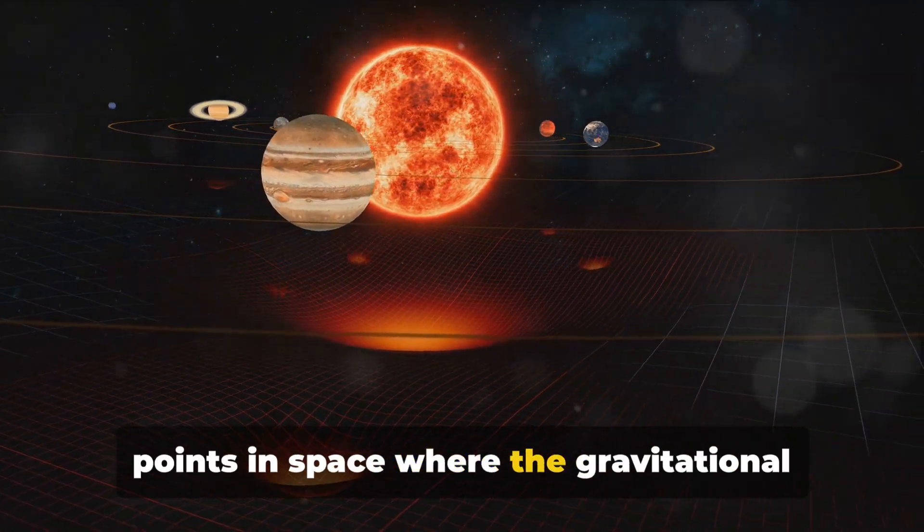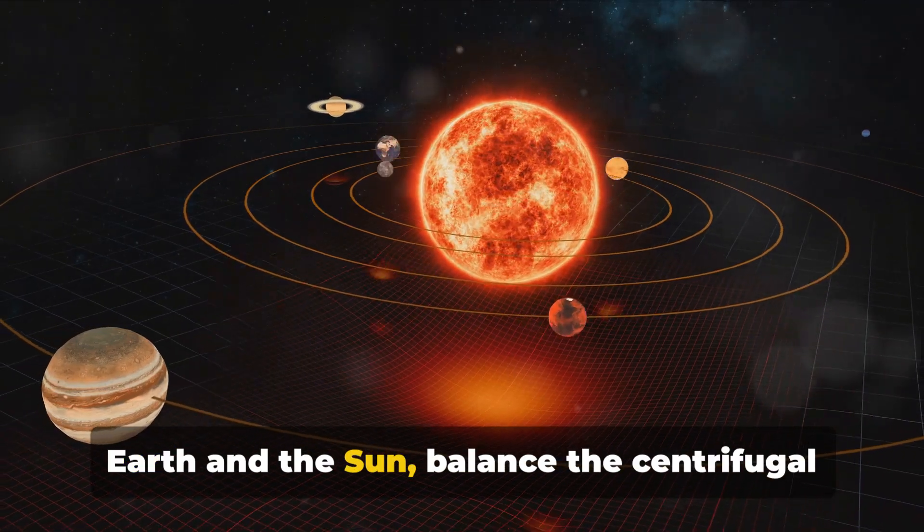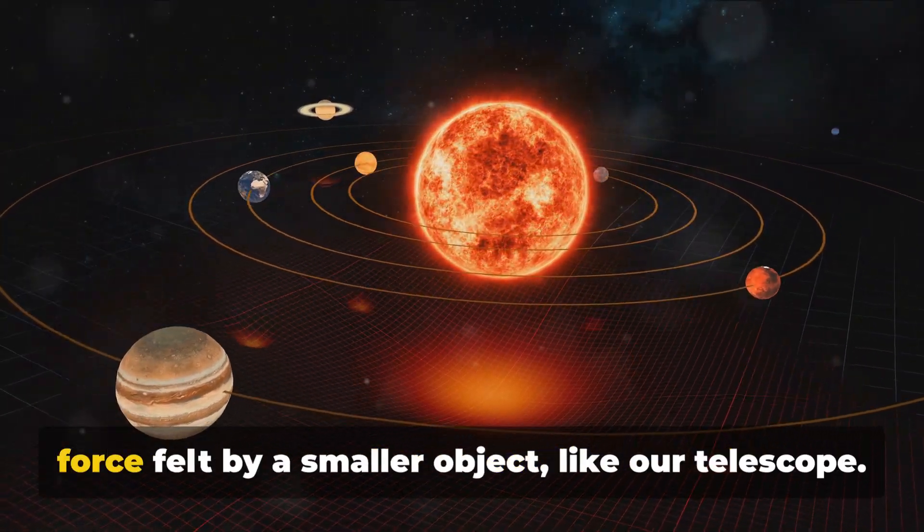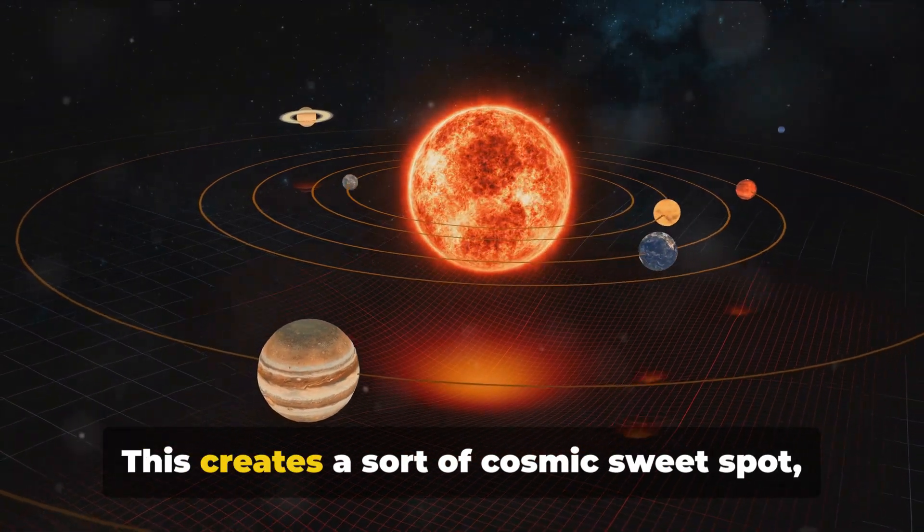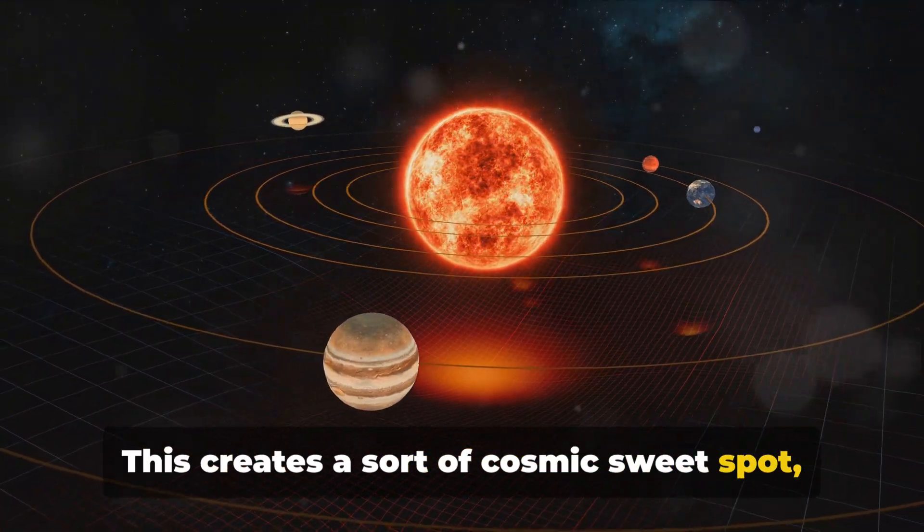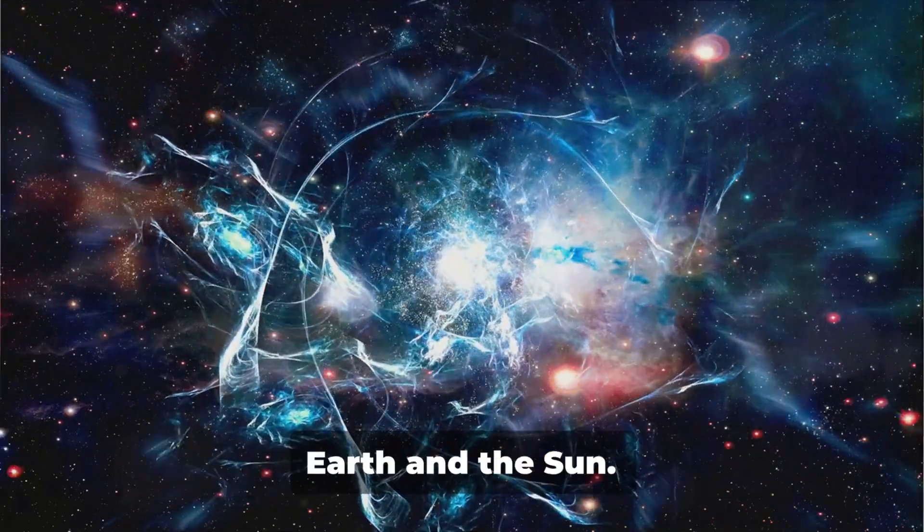Is one of five points in space where the gravitational pull of two large bodies, in this case Earth and the Sun, balance the centrifugal force felt by a smaller object like our telescope. This creates a sort of cosmic sweet spot, a stable location where the telescope can maintain a steady position relative to Earth and the Sun.